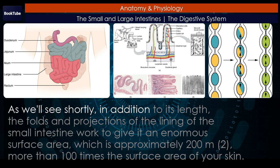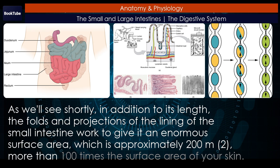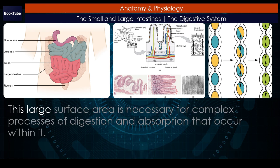In addition to its length, the folds and projections of the lining of the small intestine work to give it an enormous surface area of approximately 200 square meters — more than 100 times the surface area of your skin. This large surface area is necessary for the complex processes of digestion and absorption that occur within it.